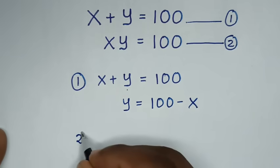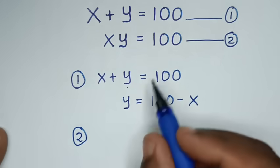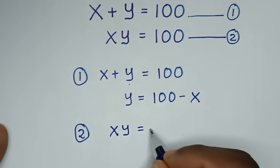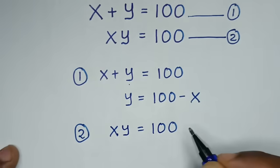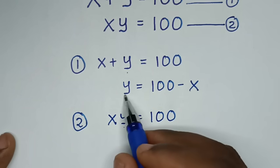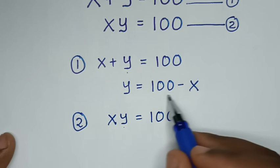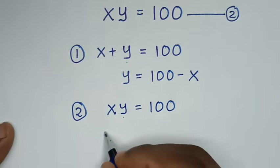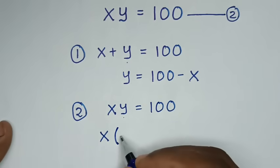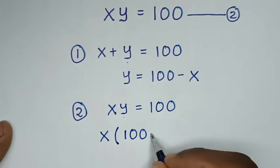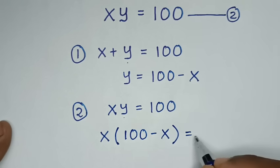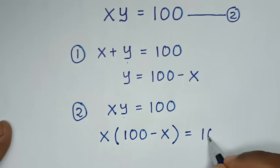From equation 2, which is x times y is equal to 100. Into here, we substitute this equation for y, whereas y is 100 minus x. So it will be x times (100 minus x) is equal to 100.